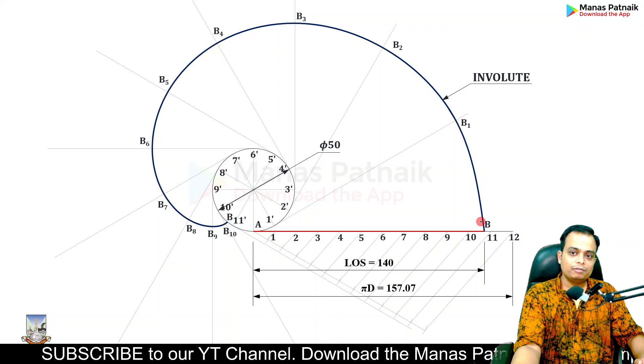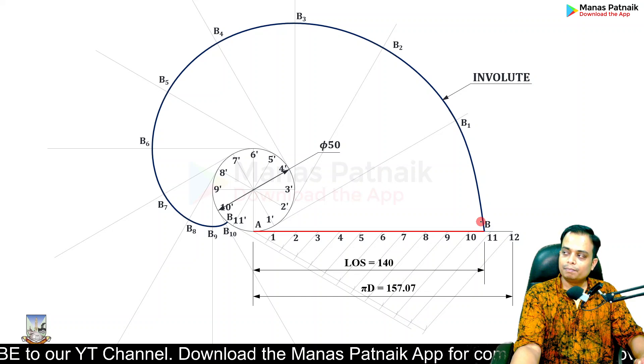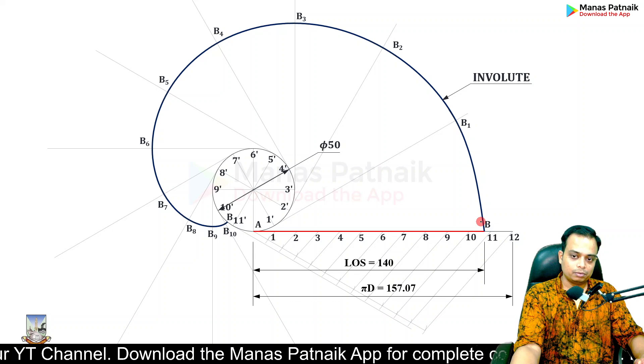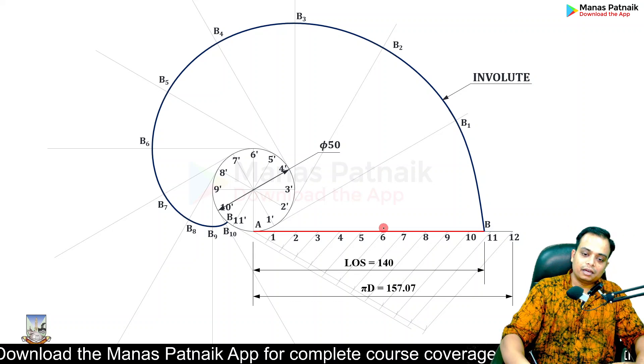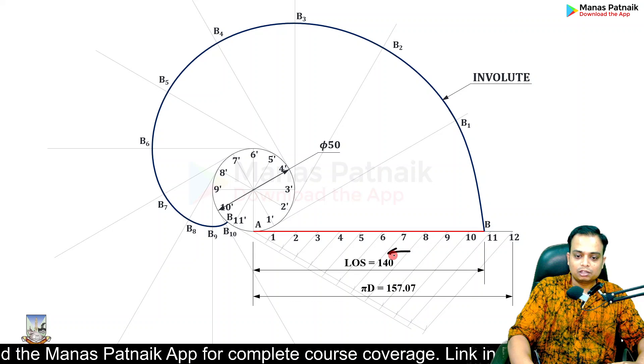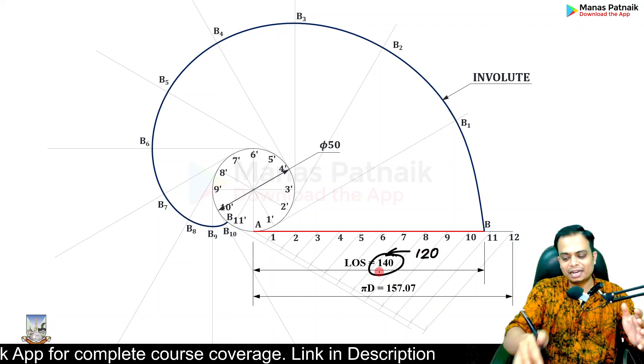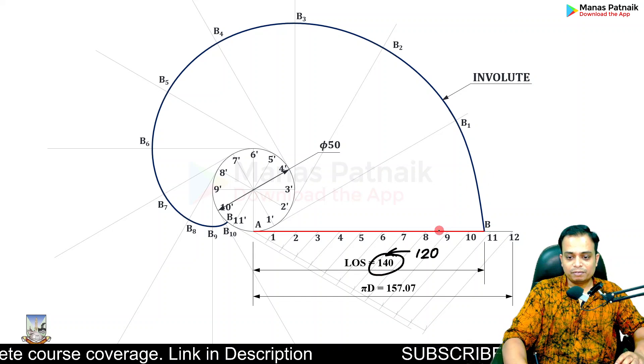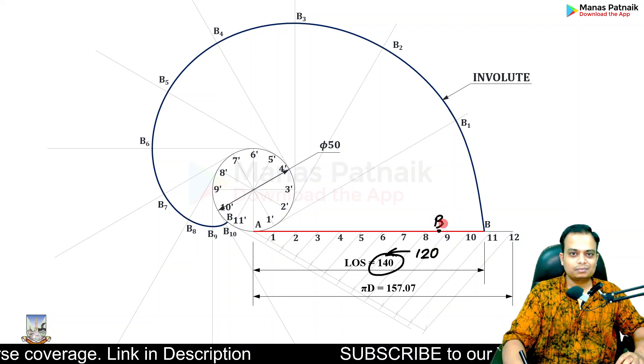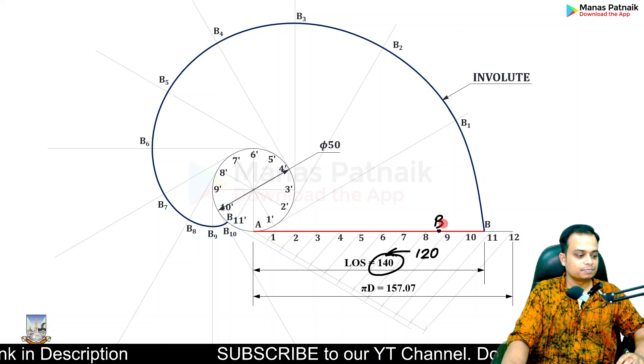That was the entire description of this problem based on involute. Mumbai University in the summer session May 2022 Engineering Graphics paper had a similar problem where the length of string was 120 millimeters. In this case it is 140 millimeters, but the entire construction process remains the same. There, point B was between 8 and 9.